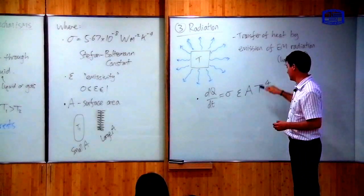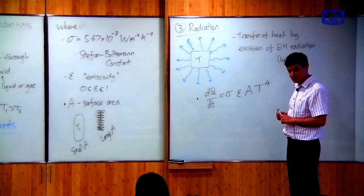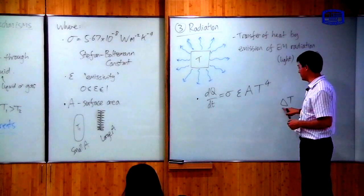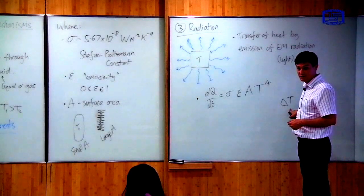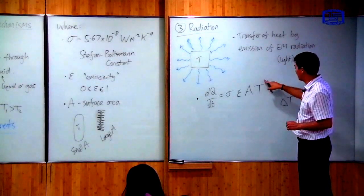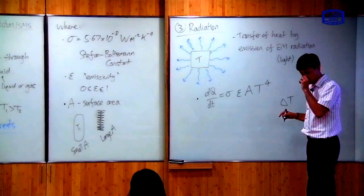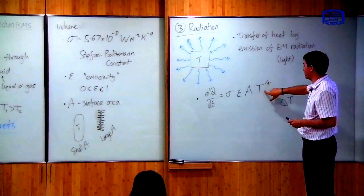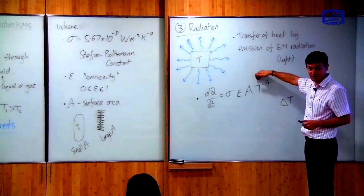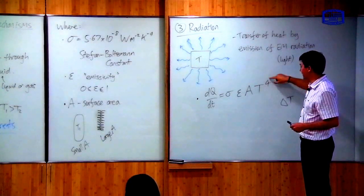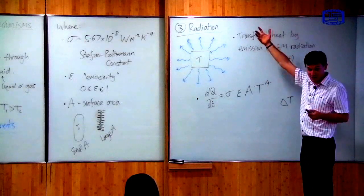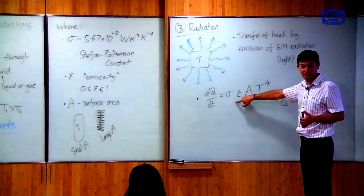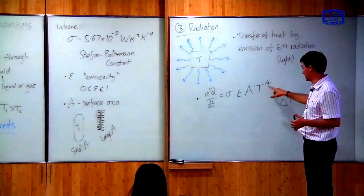The other important feature is the T to the power four in the formula. For conduction the rate of heat transfer was proportional to the difference in temperature, whereas here it is proportional to temperature to the power of four. This means that radiation is generally much more important at high temperatures than conduction.